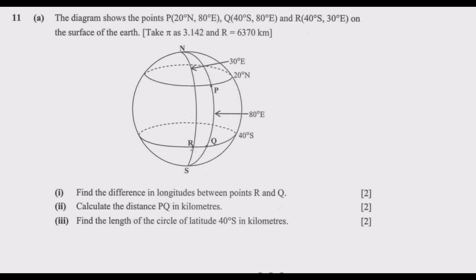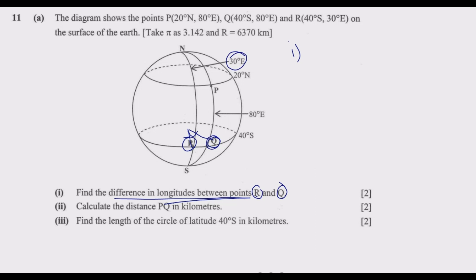We start with part 1: finding the difference in longitudes between point R and Q. R is at 30 degrees east, and Q is at 80 degrees east. Because they are both on the same side — both east — we find the angle between them. Since they are both in the same half of the earth, all east, we subtract.